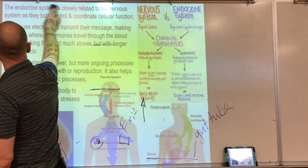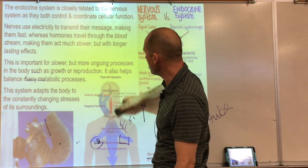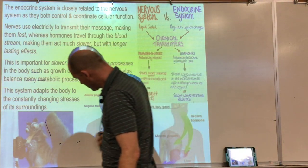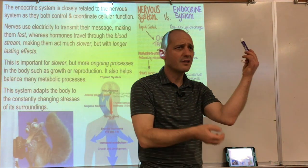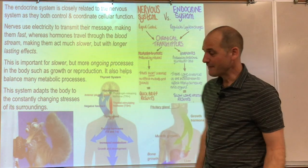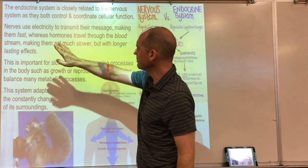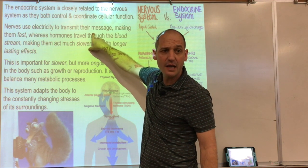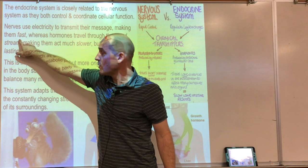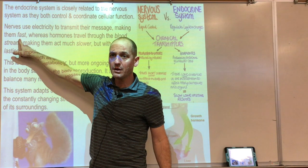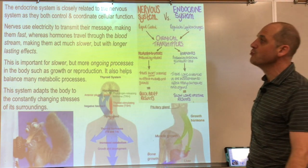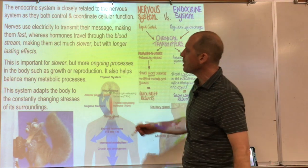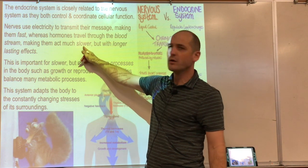The endocrine system is closely related to the nervous system — they both control and coordinate cellular function. Nerves use electricity to transmit messages, which is very fast. Hormones, by contrast, have to travel through the bloodstream, which is much slower. So endocrine glands act much slower than nerves. However, once hormones are released into the bloodstream, their effects are longer-lasting than nervous system effects.